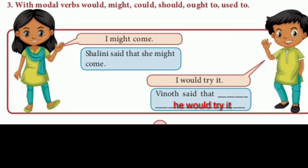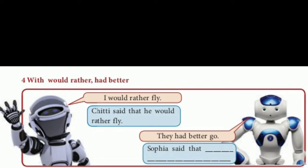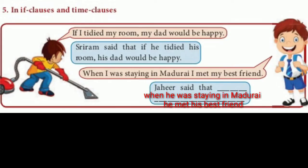Vinodhi said that he would try it. Fourth case: with 'would rather' and 'had better' — for example, 'I would rather fly' — Chitti said that he would rather fly. 'They had better go' — Sophia said that she had better go. Fifth case: in if-clauses and time clauses — for example, 'If I tidied my room, my dad would be happy' — Sriram said that if he tidied his room, his dad would be happy. 'When I was staying in Madurai, I met my best friend' — Jahir said that when he was staying in Madurai, he met his best friend.